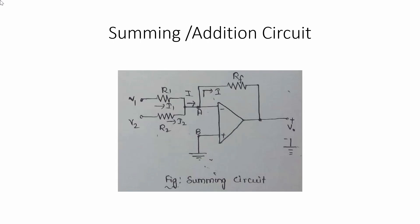This is about a summing or adding circuit — specifically the inverting summing amplifier circuit, where input is applied to the inverting terminal. The difference between an inverting amplifier and an inverting summing amplifier is that the inverting amplifier uses only one input (Vin), while the summing circuit uses more than one input. For addition we need at least two data values, so V1 and V2 are considered as inputs, making this a two-input inverting summing amplifier.